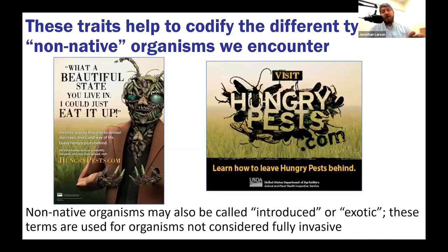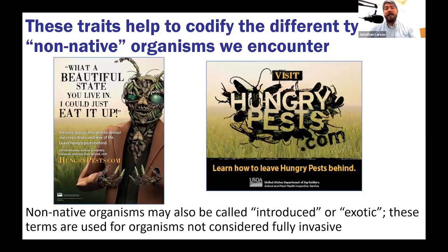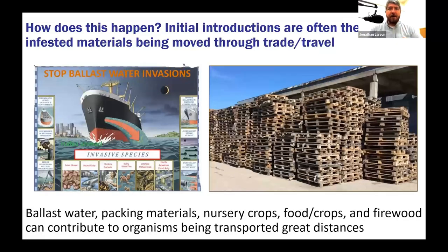These traits help separate different kinds of non-native organisms. Non-native organisms can also be called introduced or exotic species — terms used interchangeably in different circles. These terms apply to organisms that don't belong where they're found but don't check all the boxes we associate with being fully invasive: they don't cause the same level of harm. So how does this happen? How do invasive species get from one spot to another?